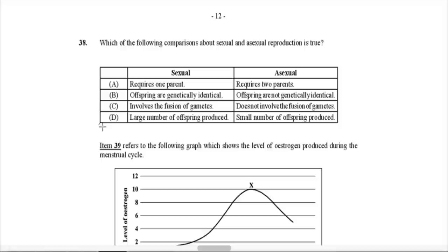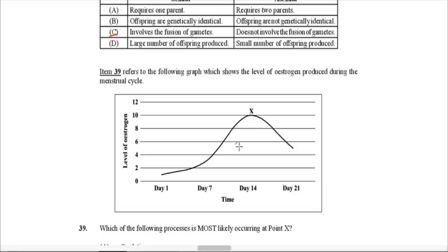Question 38: Which comparison about sexual and asexual reproduction is true? Sexual reproduction involves two parents — so option 1 is wrong. Option 2 says sexual reproduction produces offspring that are not genetically identical — that has it mixed up. Option C says asexual reproduction involves the fusion of gametes — this is definitely C, correct, since all the other comparisons are switched around. With asexual reproduction you have one parent, genetically identical offspring, and large numbers of offspring. So C is correct.